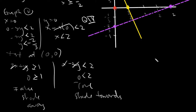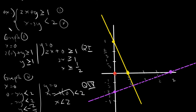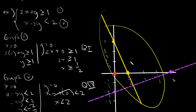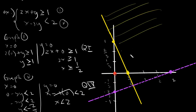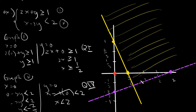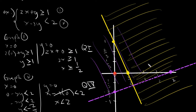So let's shade away from (0, 0) for the first equation — the yellow one. Our line is here, and (0, 0) is here, so we shade away. For the violet equation it is true, so therefore we shade towards (0, 0).